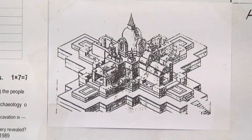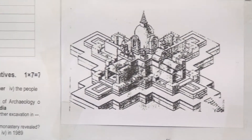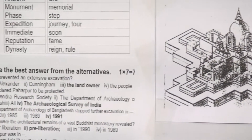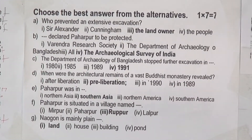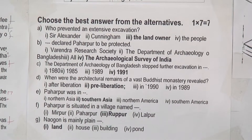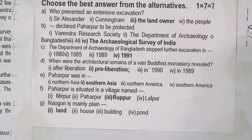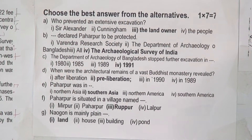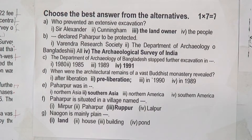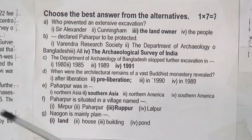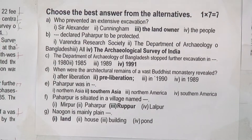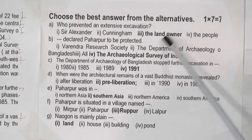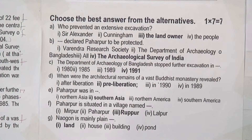Now let's find the main MCQ questions with answers. Question 1: Who prevented an extensive excavation? The answer is the landowner. So we have to find the answer to question number 1 — it is the landowner.